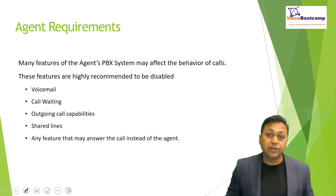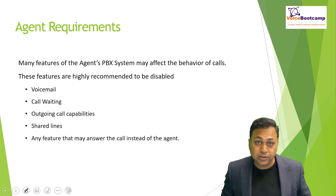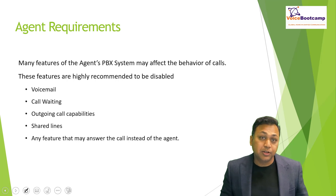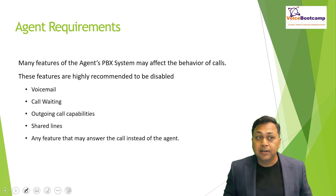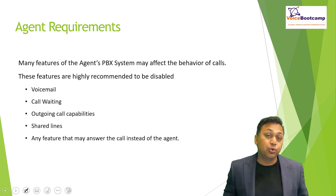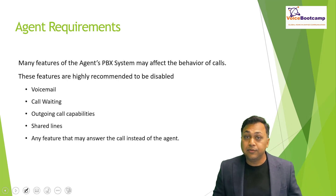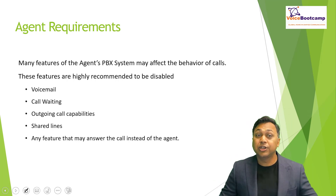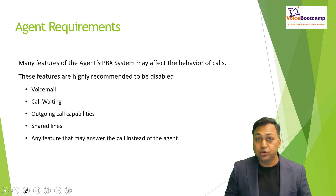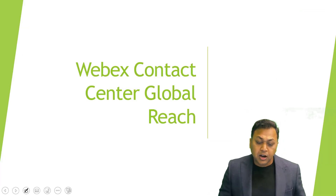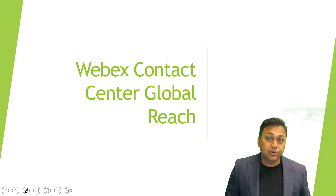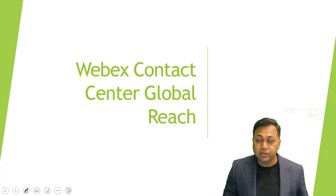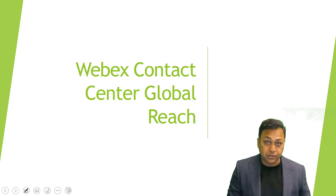Shared lines are another concern — if you dial the contact center number and multiple phones ring on the same extension, the second person sharing the line may not be an agent, or the call might end up going to the wrong device, giving the contact center wrong data. Any feature that could answer the call instead of a live agent should be disabled. That covers trunk sizing and agent requirements. Next, we'll discuss the global reach of the Cisco Contact Center.